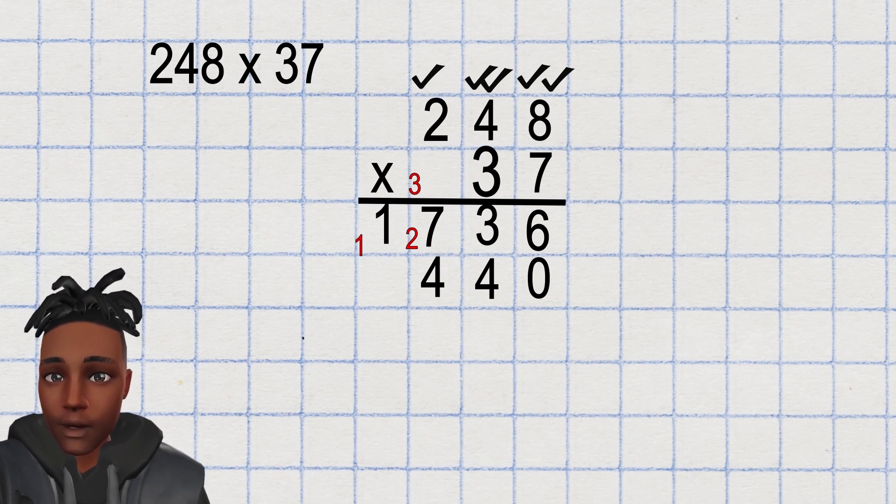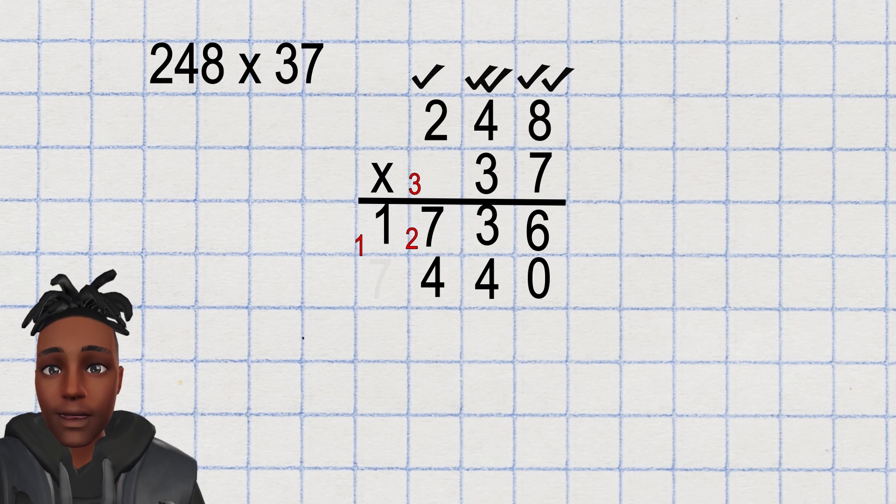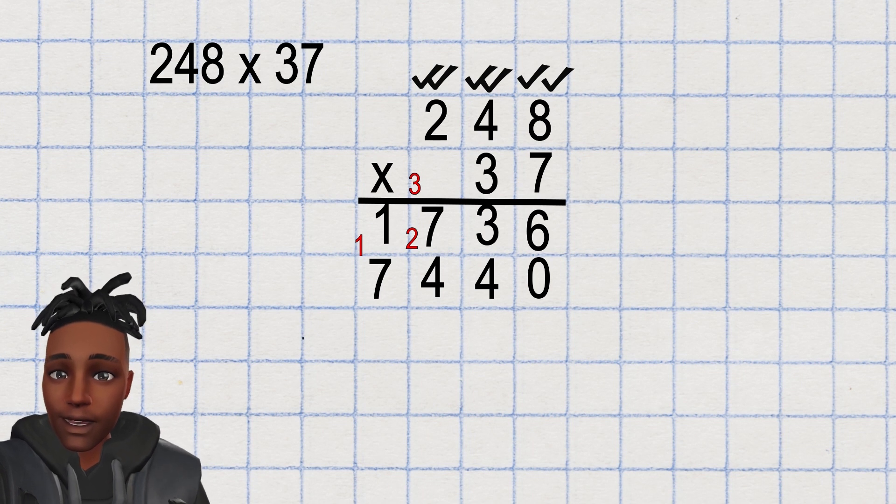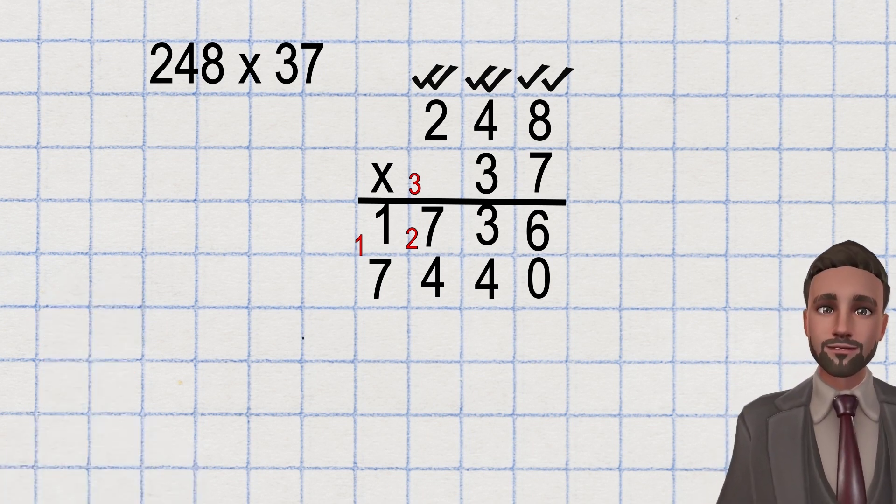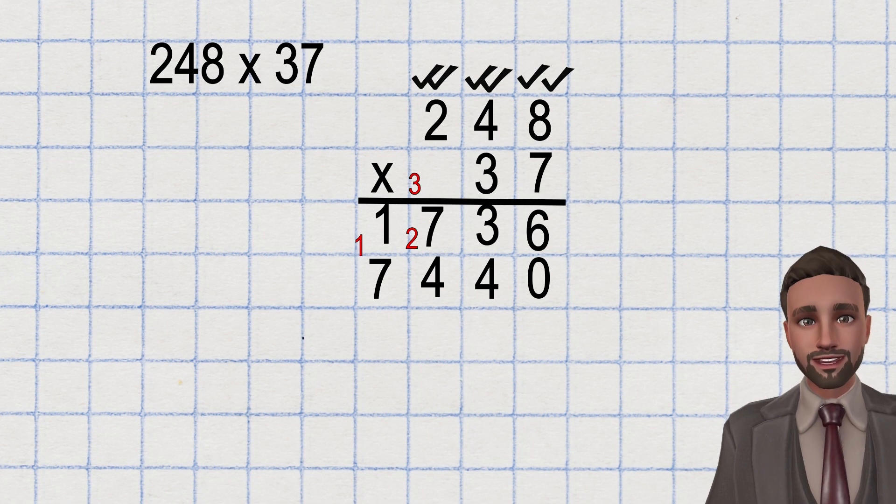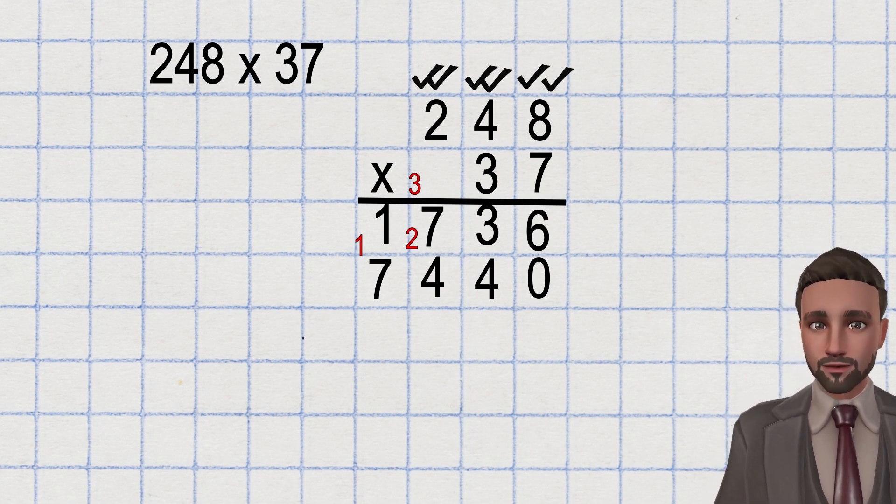Finally, 2 times 3, 6. Add the 1, 7. Tick the 2. If you have remembered every step, you will have 2 ticks above each digit in the first row. Nice. I like that. It's a good way to remember that you've multiplied every single digit, but you forgot a step.